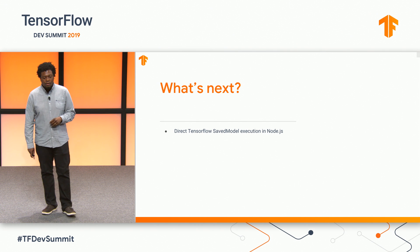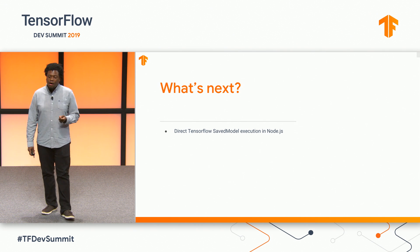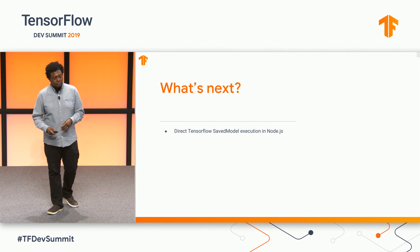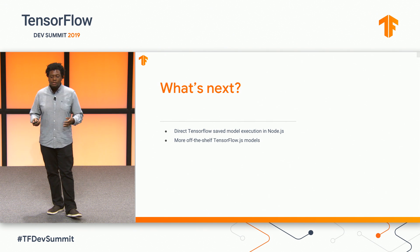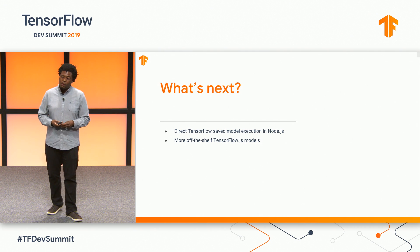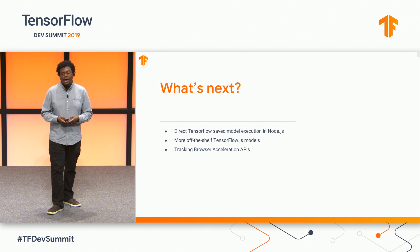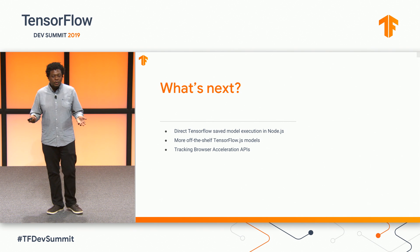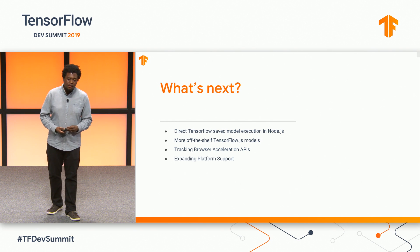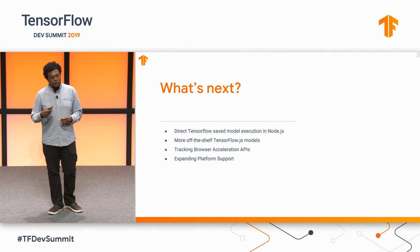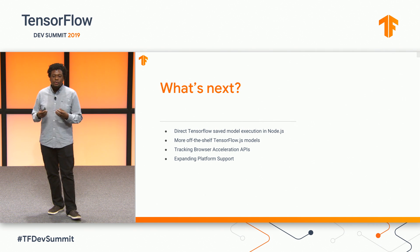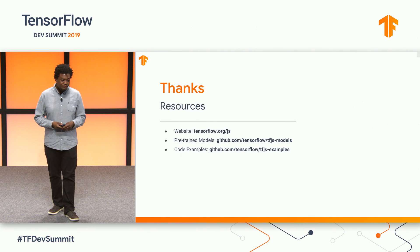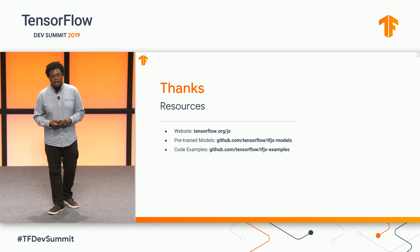What's next for us? We want to enable you to execute SavedModels on our Node.js backend without going through the conversion process, which will open up many more models to be served using the Node.js stack. We want to provide more off-the-shelf models to make it easier to build ML-powered JavaScript apps. We're always keeping an eye on browser acceleration proposals like SIMD and WASM, as well as emerging proposals like WebGPU and WebML. The browser is only going to get faster, and so will we. Finally, we want to expand the platforms on which TensorFlow.js can run — including the Raspberry Pi and other hybrid mobile platforms that run JavaScript.